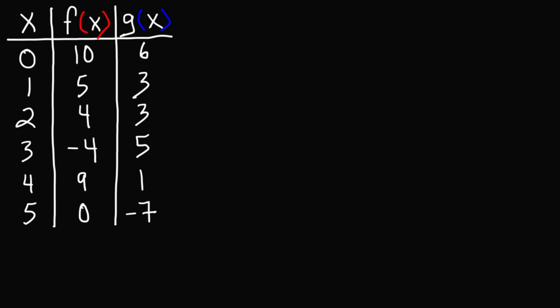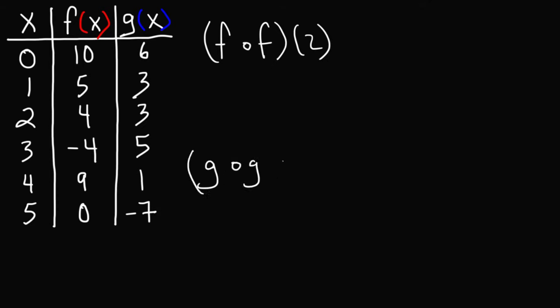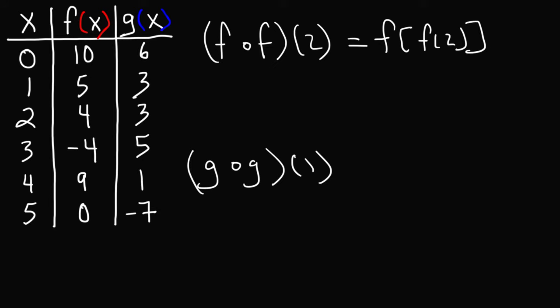Now for practice, let's try two more examples: f of f of 2, and g of g of 1. Let's start with f of f of 2. When x is 2, f has a value of 4, so now we have f of 4. When x is 4, f has a value of 9. So f of f of 2 is equal to 9.